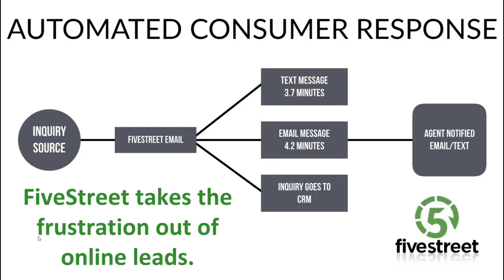Five Street basically takes the frustration out of online leads. When a lead comes in, it goes to your Five Street email. The client then gets a text message in about three and a half minutes, with whatever message you customize. At 4.2 minutes they receive an email. You then put that lead into your CRM — ZAP is a great source — and you get email and text notifications letting you know that client is now yours.